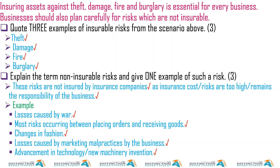Examples include losses caused by war, risks occurring between placing orders and receiving goods, and changes in fashion. For example, if you're Mr. Price and you have a lot of clothes in your shop and people have lost taste for them, you go to your insurance company claiming the clothes weren't bought — insurance companies don't take that risk.